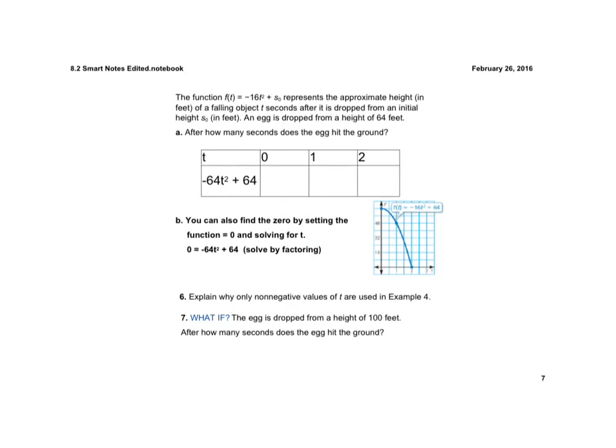And here they're giving us a function that represents the approximate height in feet of a falling object t seconds after it is dropped from an initial height of s₀ feet. An egg is dropped from a height of 64 feet. After how many seconds does the egg hit the ground?